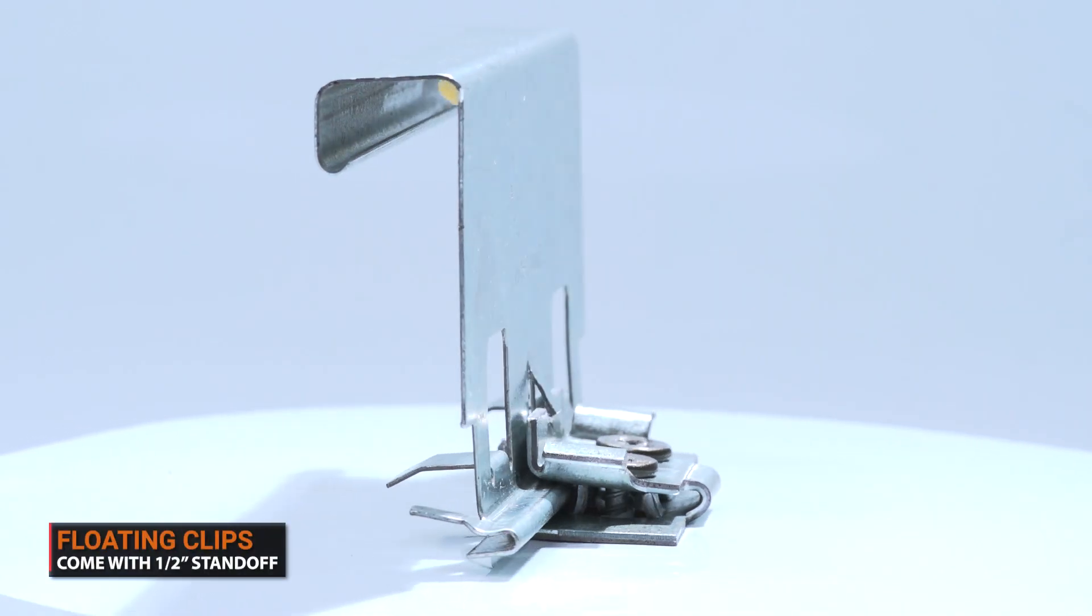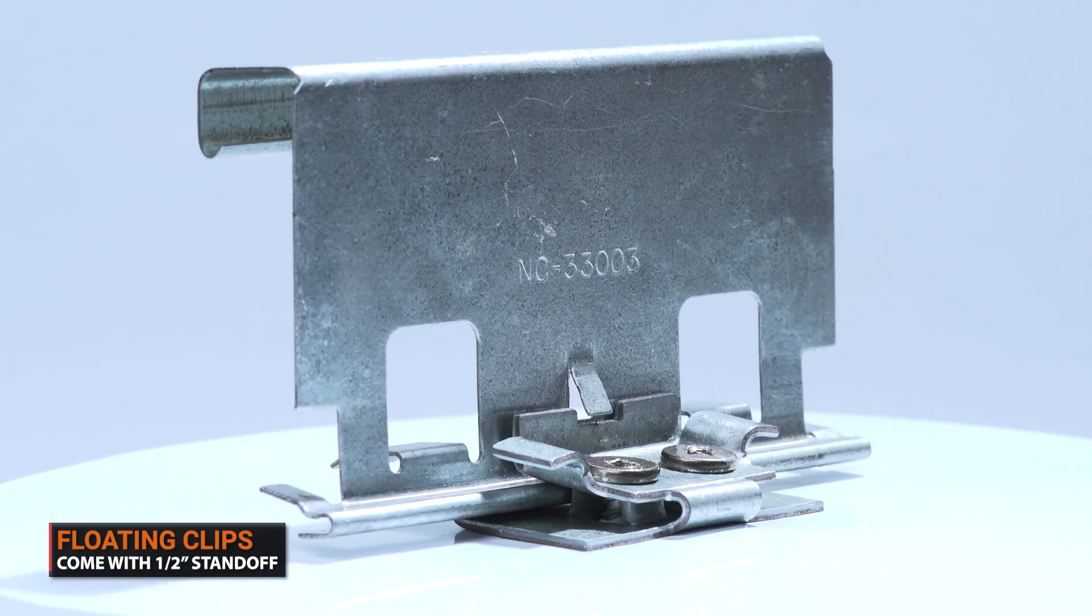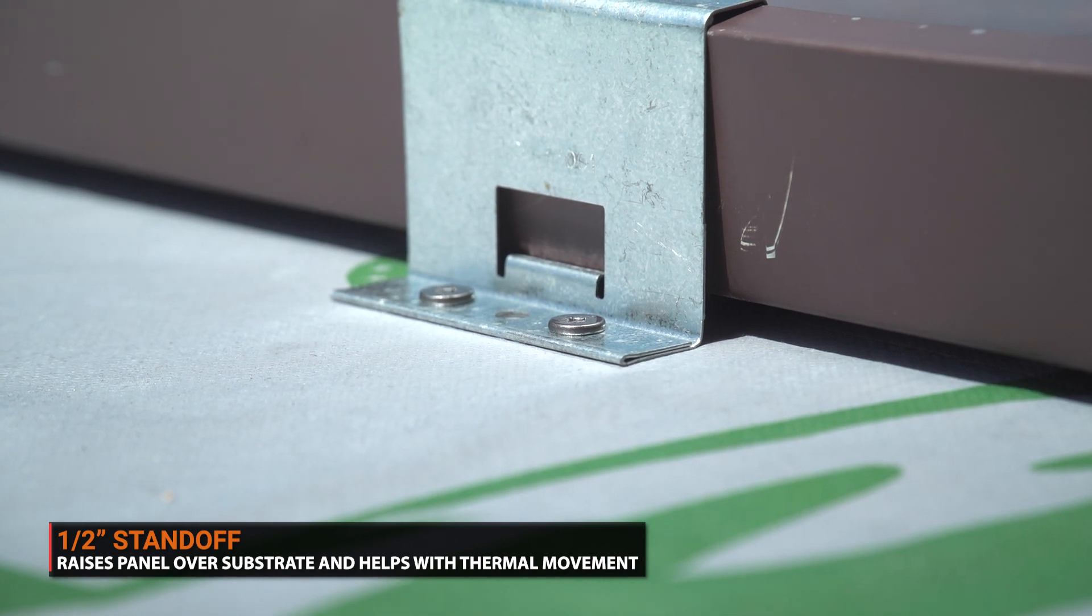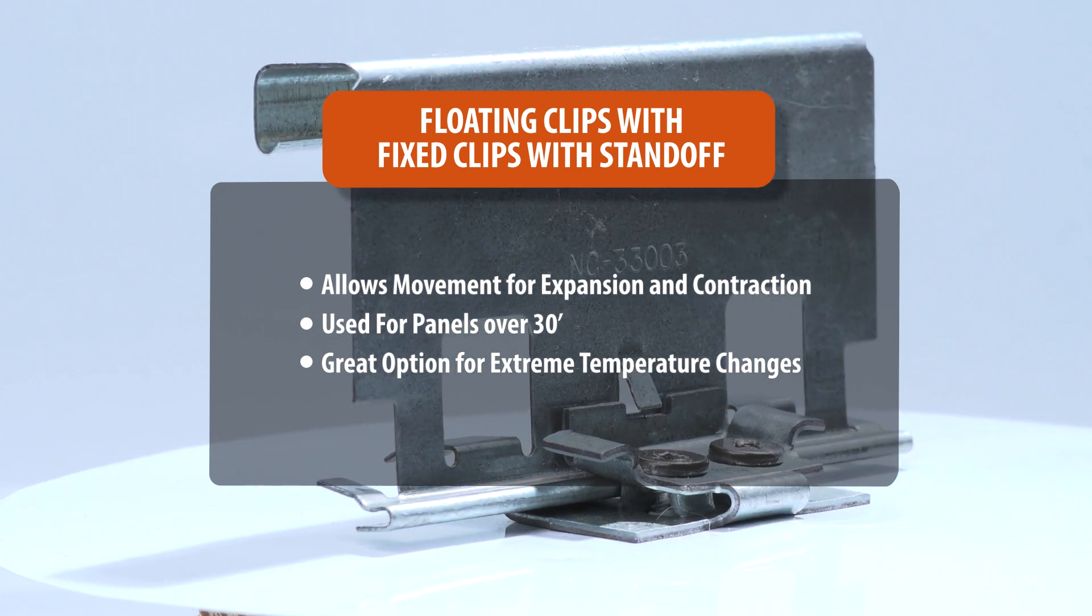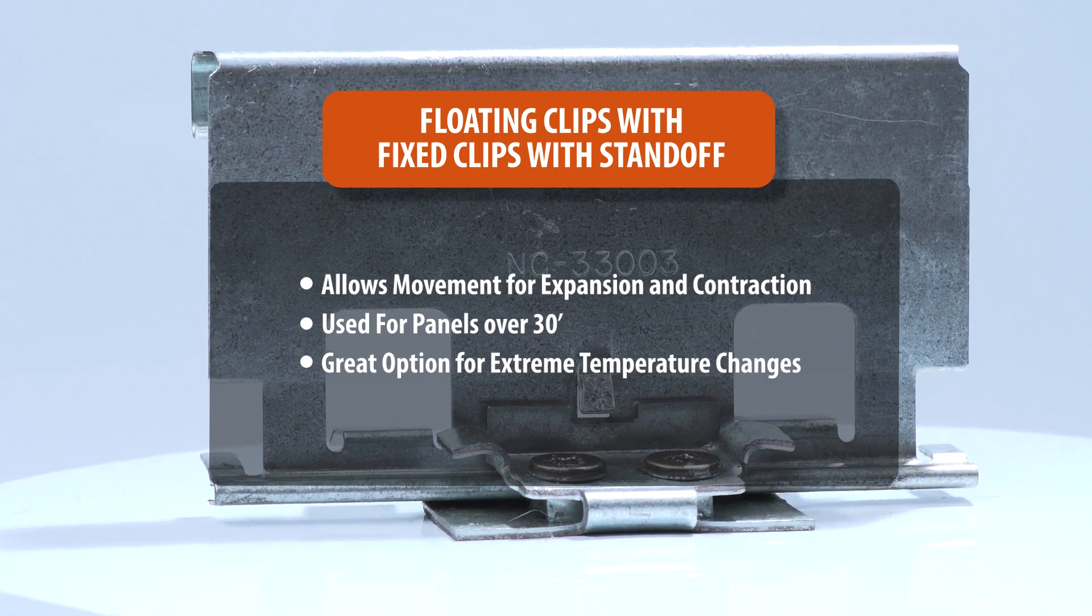Floating clips are designed with a half-inch standoff, or space that elevates the roof panel above the substrate. The standoff of the clips raises the panel slightly over the substrate and assists with the thermal movement of the panel. Floating clips, installed in conjunction with fixed clips with standoff, are recommended to be installed on panels over 30 feet.